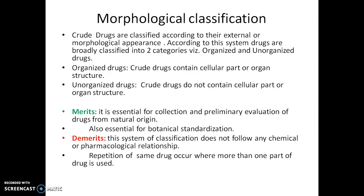Next is morphological classification, which is a very important system for determining the identity of crude drugs and preventing adulteration. Crude drugs are classified according to their external or morphological appearance. According to this system, drugs are broadly classified into two categories: organized crude drugs and unorganized crude drugs. Organized crude drugs contain cellular parts or organ structures.